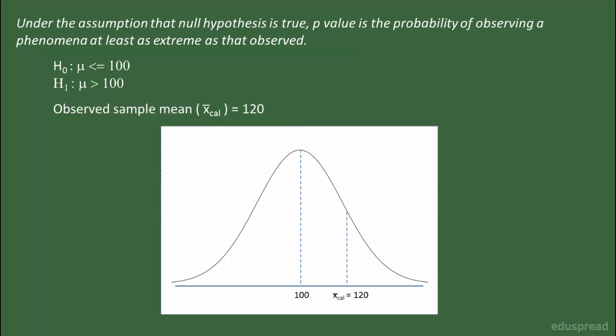Graphically, we can represent all this information like this. Here we have μ, the hypothesized mean, equal to 100. The observed sample average is equal to 120, and we have to find the P-value. By definition, assuming that the null hypothesis is true, the P-value is the probability of observing a phenomena at least as extreme as that observed. So in this case, the P-value is the probability of getting 120 or something more extreme — that is, 120 or something even farther to the right of 120 — assuming that the null hypothesis is true. By extreme values here, we mean values to the right of 120, because this is a case of a right-tailed test.